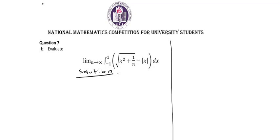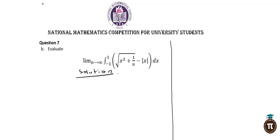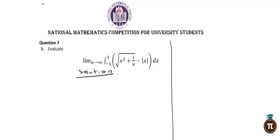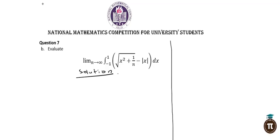Hello everyone. In this video we are going to be looking at one of the national mathematics exam questions for university students. This is 2017 question 7b, and we are told to evaluate the limit as n tends to infinity of the integral from minus 1 to 1 of the square root of x squared plus 1 over n, minus the absolute value of x, ds.